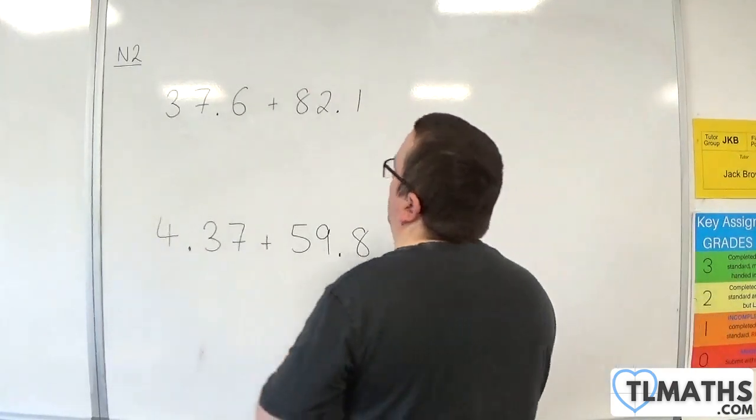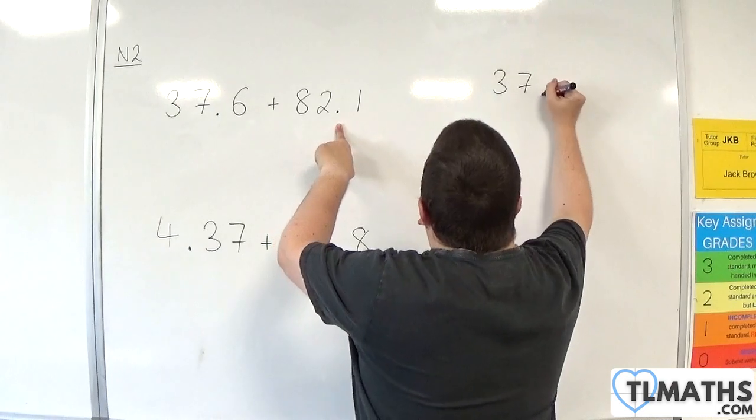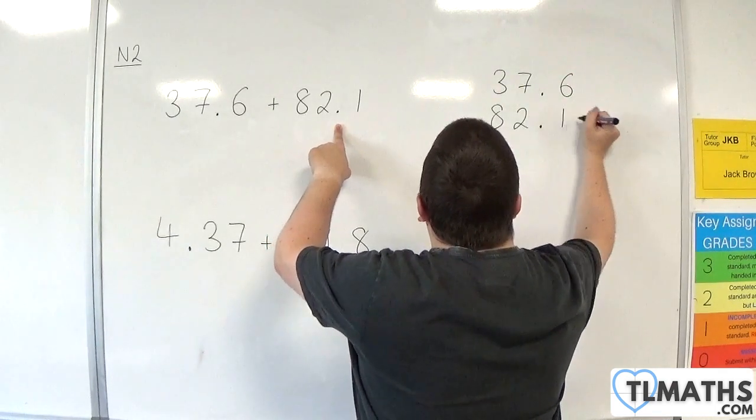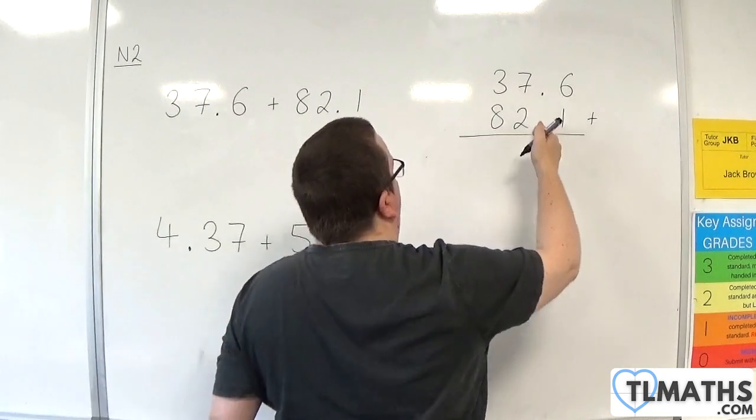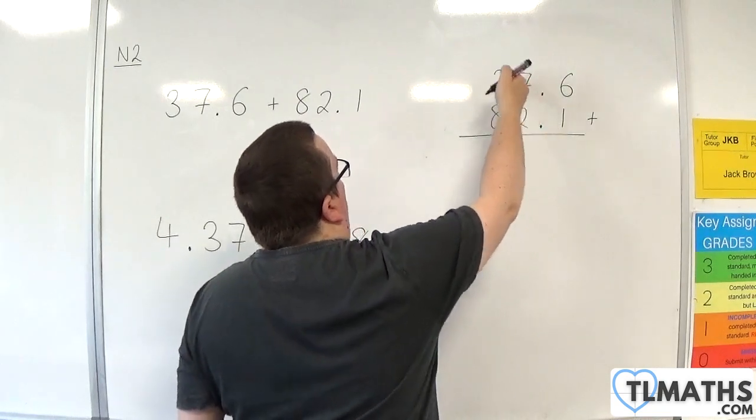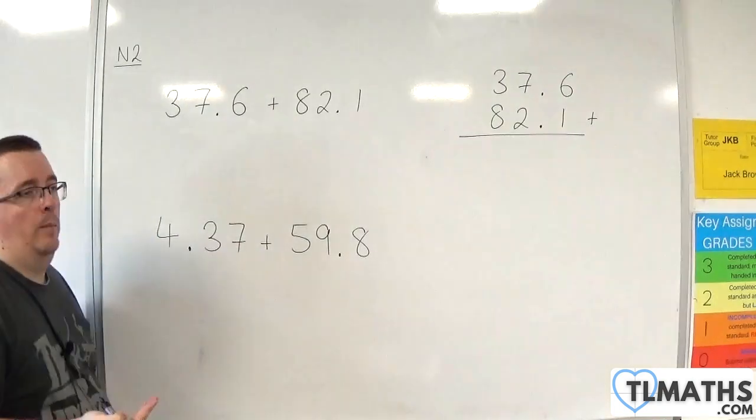You just need to make sure that your decimal points line up. So 37.6, 82.1. Make sure the decimal points line up, and so that means your units column, your tens column, and your tenths column all line up as well.